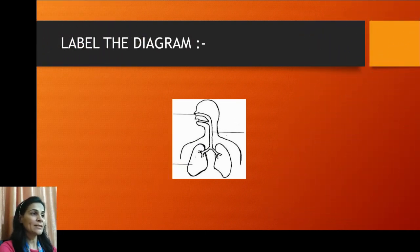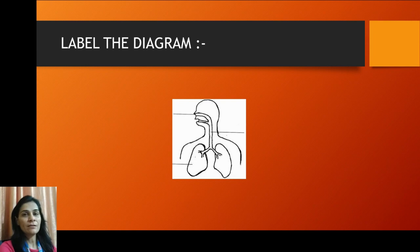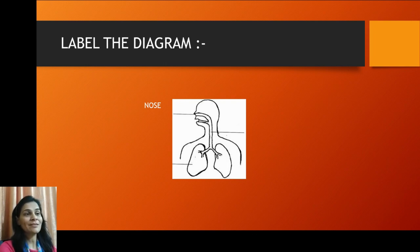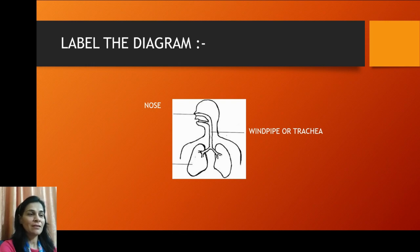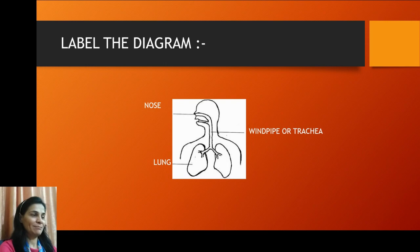Now label the diagram. As you can see, there is a picture. You have to label: first, air enters the body through the nose; second, the tube-like structure through which air enters the lungs is the windpipe or trachea; third, through the windpipe, air enters the two balloon-like structures — these are the lungs. You have to practice drawing this diagram in your rough notebook.